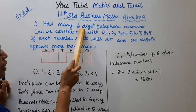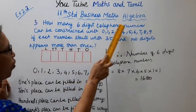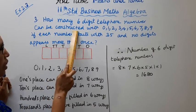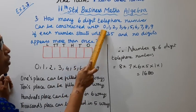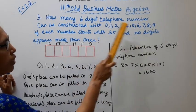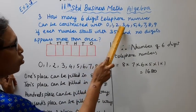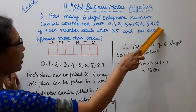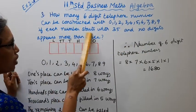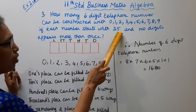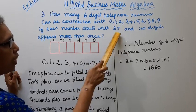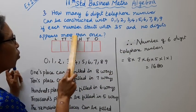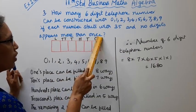How many 6-digit telephone numbers can be constructed with digits 0 to 9 (0, 1, 2, 3, 4, 5, 6, 7, 8, 9), if each number starts with 35 and no digit appears more than once?